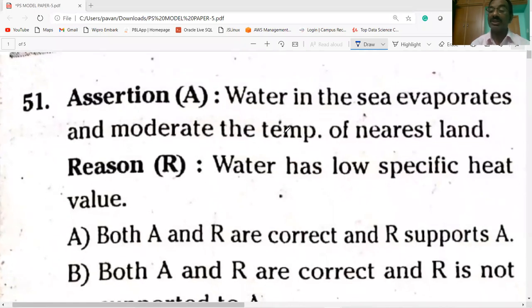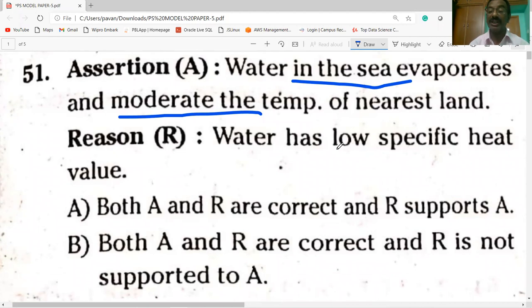Today, first question on the screen. Water in the sea evaporates and moderates the temperature of nearest land. Water has low specific heat. You know that water has high specific heat, so reason is wrong.